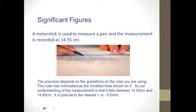Significant figures are going to be very important. Keep in mind that significant figures express the precision of an instrument. The precision depends on the gradations of the ruler you're using. So if that ruler has millimeters as the smallest lines, our understanding of the measurement is that it falls between 14.50 centimeters and 14.60 centimeters.